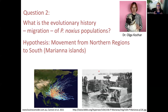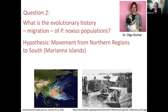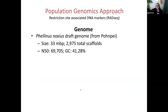Next, we wanted to look at the evolutionary history and migration of Phellinus noxius populations — work done by postdoc Olga Kozar. Our hypothesis was that there was movement from northern regions southward into the Mariana Islands. One hypothesis was that it was carried by typhoons — there were quite a few typhoons occurring in this region from 1980 to 2005. A second hypothesis was movement through wood packing materials, since wood pallets were developed during World War II and being moved into the Philippines, which could suggest movement from north to south.